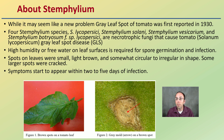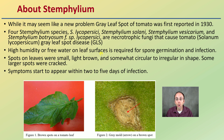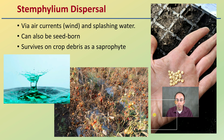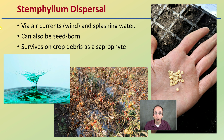While it may seem like a new problem, gray leaf spot in tomato was first reported way back in 1930. There are four different Stemophilium species, which we'll cover in a general case. High humidity or free water on leaf surfaces is required for spore germination and infection. Spots on leaves are small, light brown, and somewhat circular to irregular in shape; some larger spots can be seen that are cracked. Symptoms appear within two to five days of infection. Dispersal is via air currents, wind, and splashing water. It can also be seedborne and survives on crop debris as a saprophyte, so you want to clean your fields and remove any debris from suspected cases.